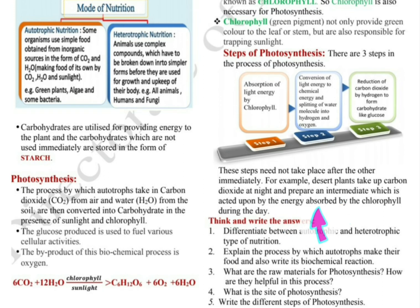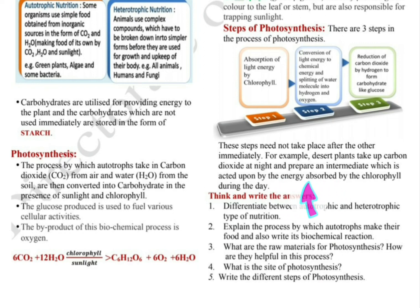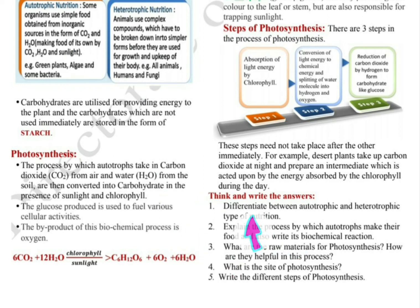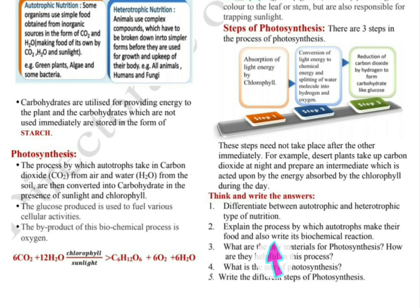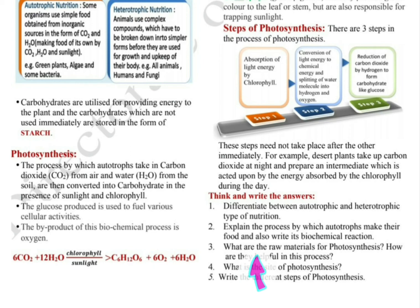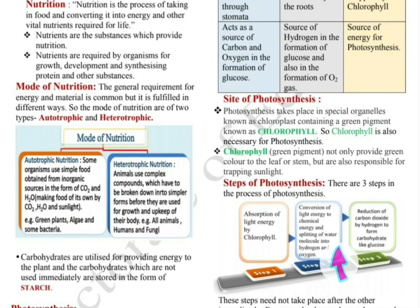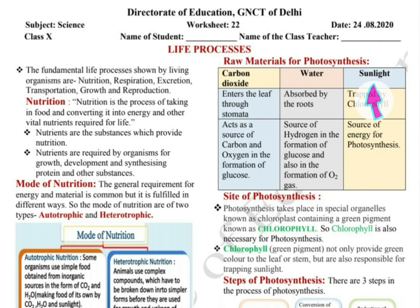Now for the question and answer section. Question 1: Differentiate between autotrophic and heterotrophic type of nutrition — you have to write the differences in a table format with examples. Question 2: Explain the process by which autotrophs make their food and also write its biochemical reaction — the process is photosynthesis, and the biochemical reaction is given above. Question 3: What are the raw materials for photosynthesis? There are three raw materials: carbon dioxide, water and sunlight. Chlorophyll is not written as a raw material because it acts as a catalyst and does not participate in the reaction itself.